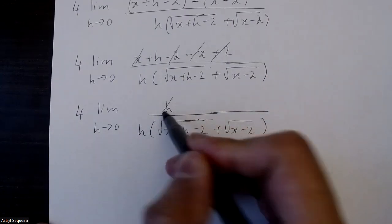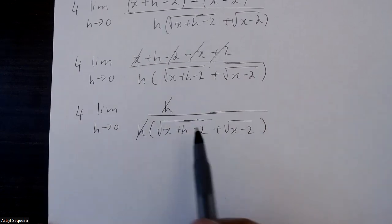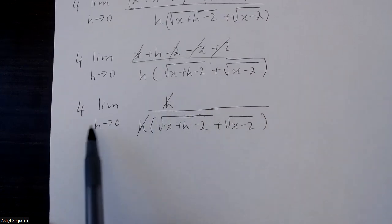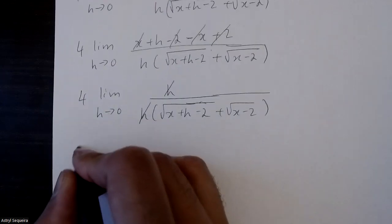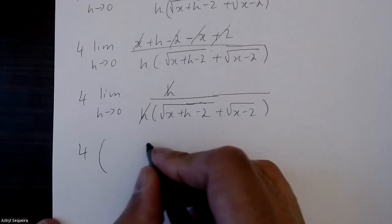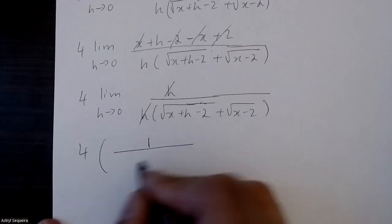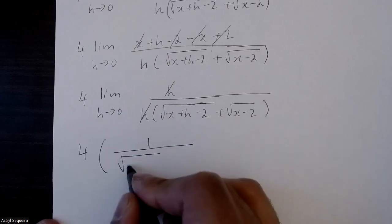So now I can finally cancel off these two h's, and I know once I cancel off the h's I can sub in my h as 0. So I'm going to be left with 4 times 1 over root x plus 0 minus 2, so that's actually just x minus 2, plus root x minus 2.